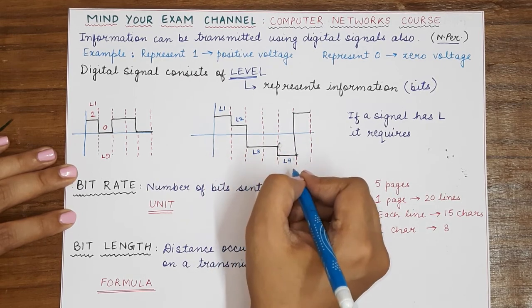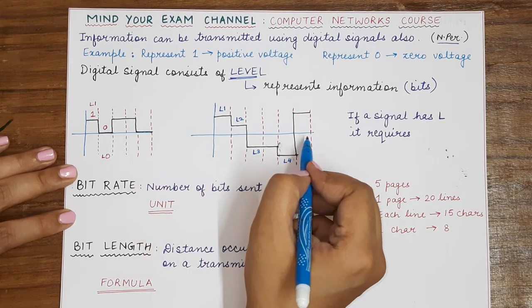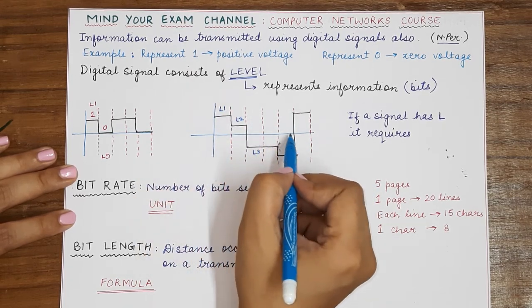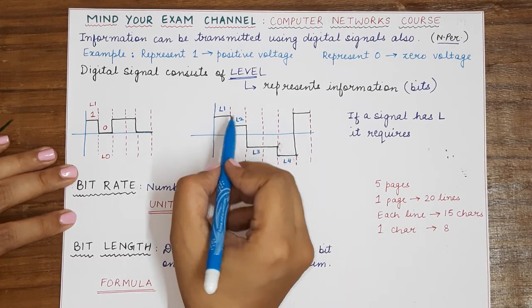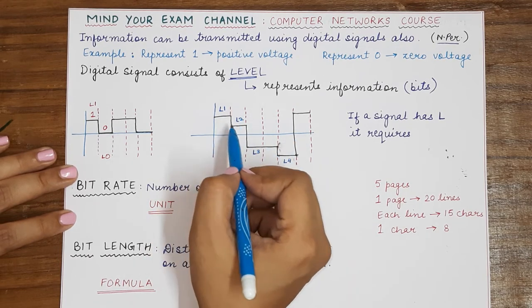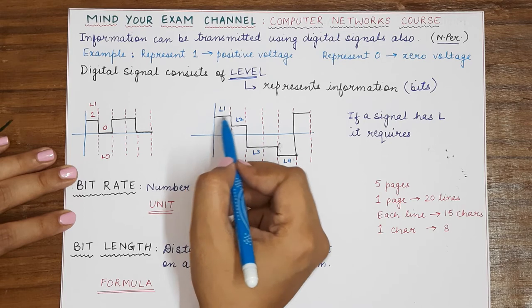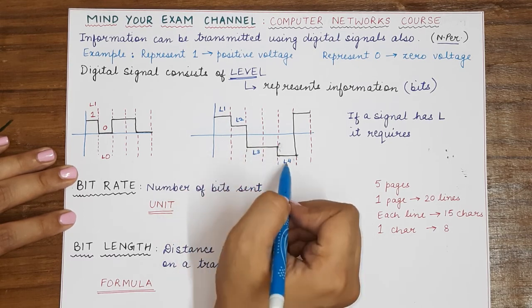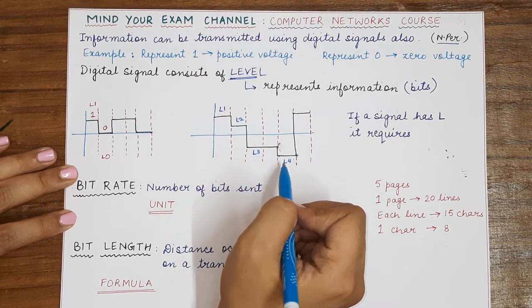So notice carefully that this particular digital signal does not have any level which is representing zero voltage. Rather, two levels represent two different values of positive voltage whereas the remaining two levels represent two different values of negative voltage.